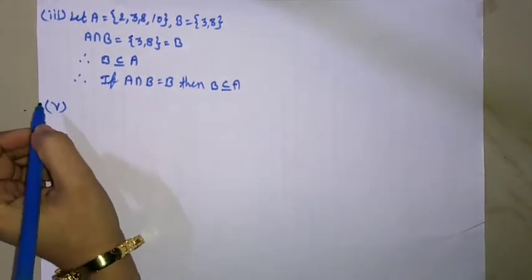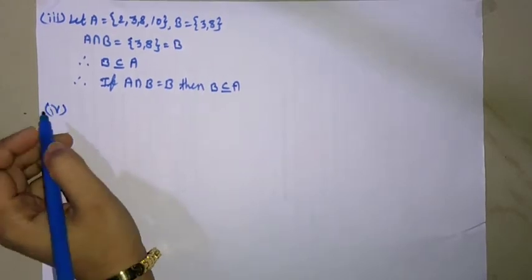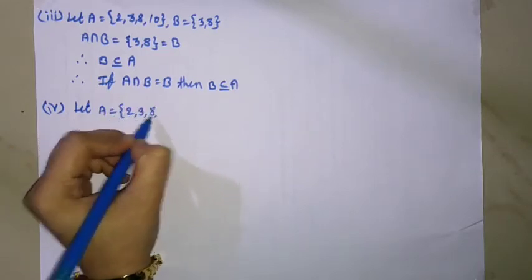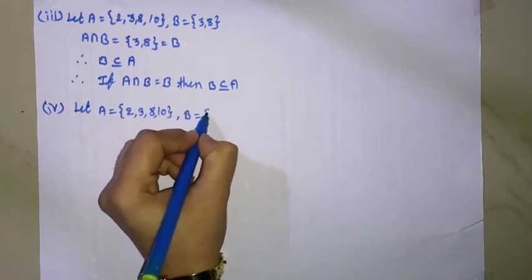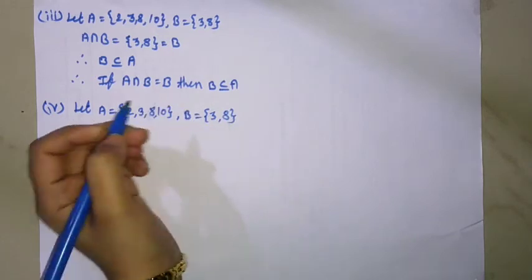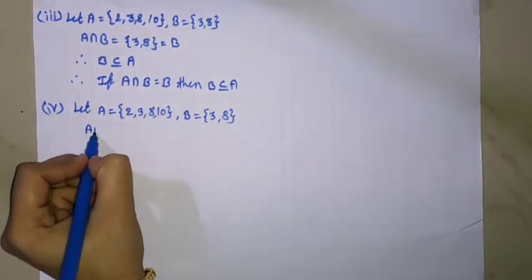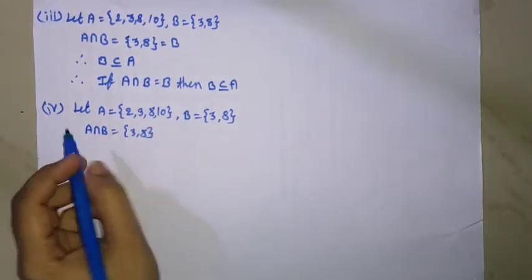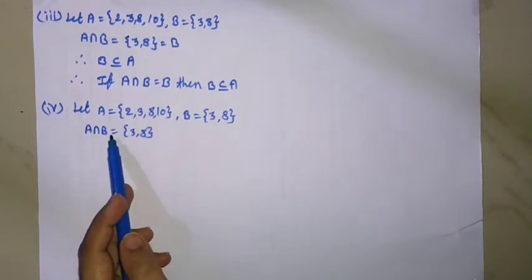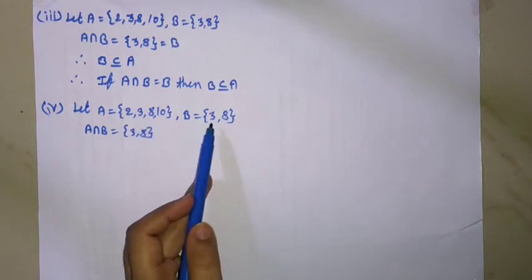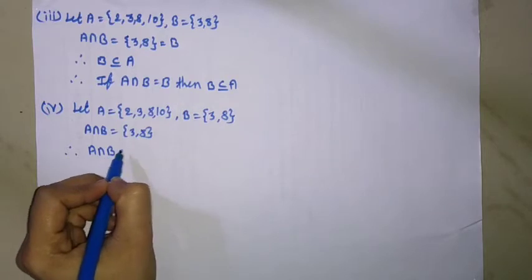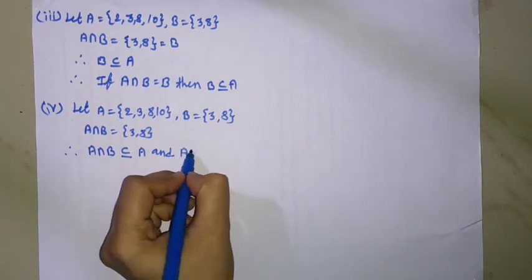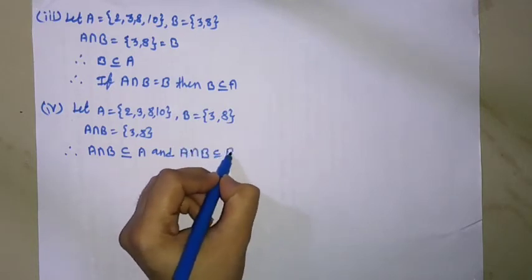Example of the fourth property. Let A equal to {2, 3, 8, 10} and B equal to {3, 8}. Then A intersection B equal to {3, 8}. Since all elements of A intersection B are present in set A and set B, A intersection B is a subset of A and A intersection B is a subset of B.